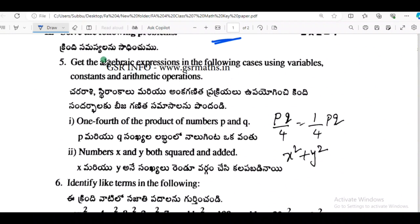Next one, 2 marks only, 5th one. Get the algebraic expression in the following cases using variables, constants and arithmetic operations. So one-fourth of the product of numbers p and q. One-fourth of the product, so p times q divided by 4, equal to 1 by 4 into pq.